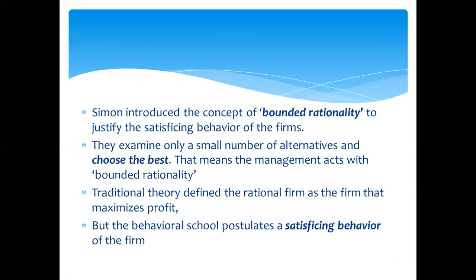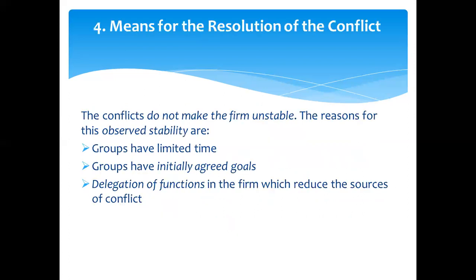Simon introduced the concept of bounded rationality to justify the satisficing behaviour of firms. Bounded rationality simply means limited rationality — rationality is limited. Firms examine only a small number of alternatives and choose the best among them. That means managers act with bounded rationality. Traditional theory defined the rational firm as one that maximizes profit, but the behavioural school postulates a satisficing behaviour of the firm.